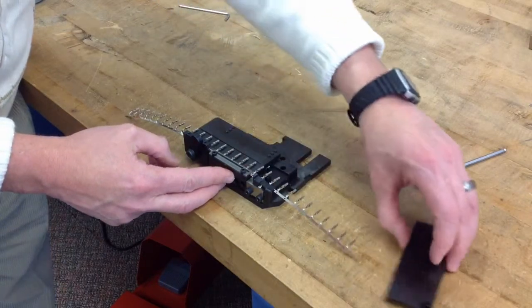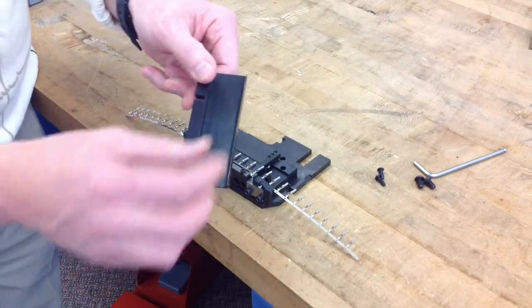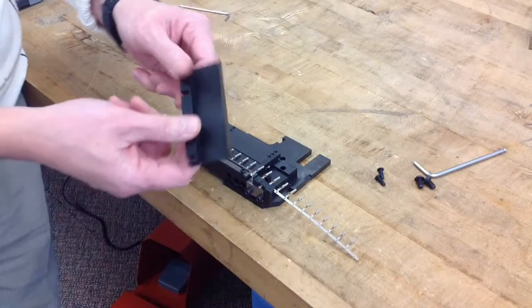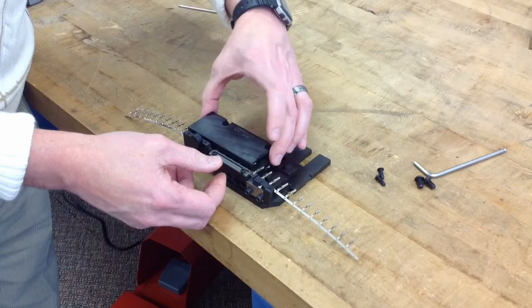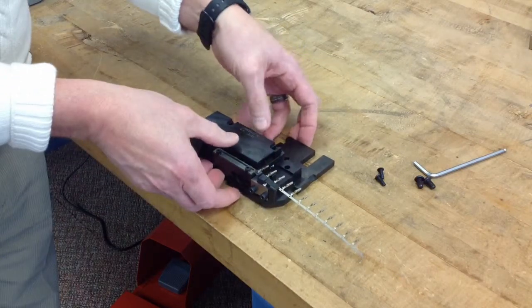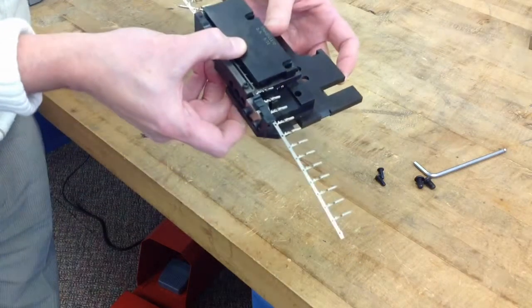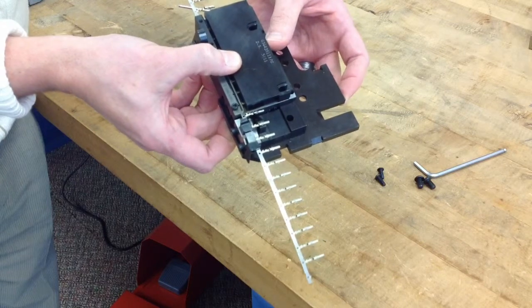Next thing you want to do is the rear cover has a very thin edge on it. You want to position that thin edge between the insulation grip and the conductor grip. So I'll do that.